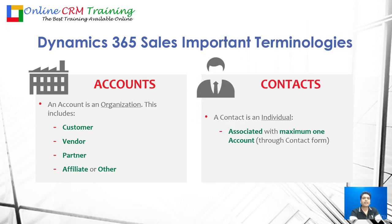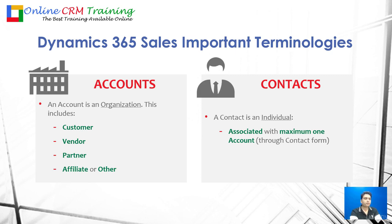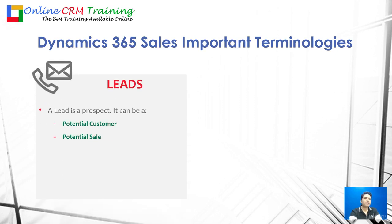The next one is contacts. A contact is an individual — a contact is also your customer, but it is an individual person. A contact can be associated with a maximum of one account, which is called its primary contact. For any company you are doing business with, you will need a person to interact with, and that becomes your primary contact. Accounts are organizations and contacts are individuals.